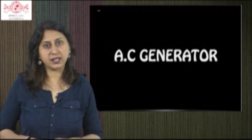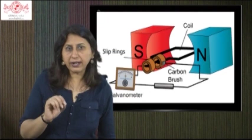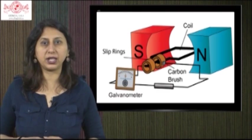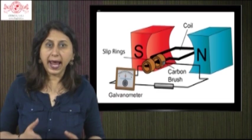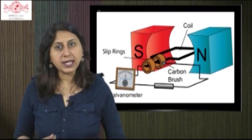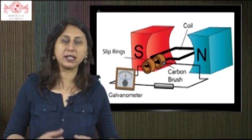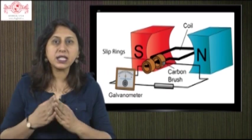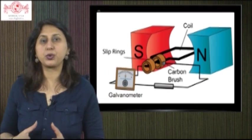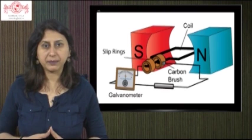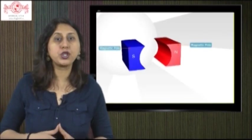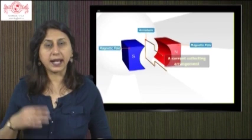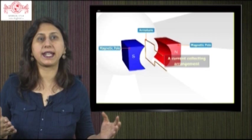AC generator: A generator is a device which converts mechanical energy into electrical energy. In a generator, an induced EMF is produced by rotating a coil in a magnetic field. The flux linking the coil changes continuously, hence a continuous fluctuating EMF is obtained. It consists of two oppositely concave cylindrical core magnets, an armature, and a current collecting arrangement.